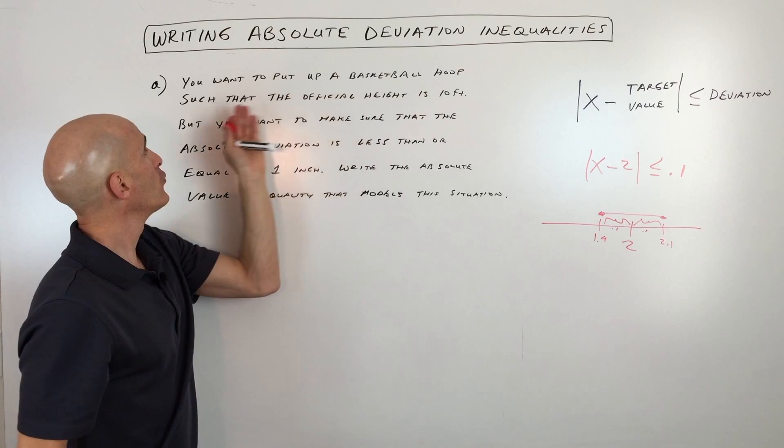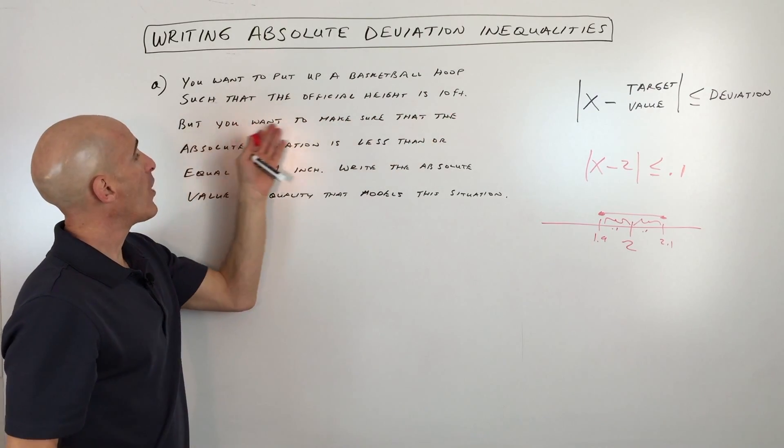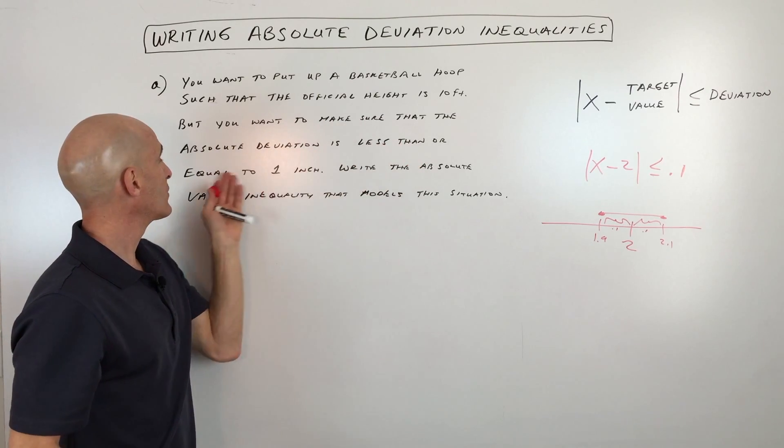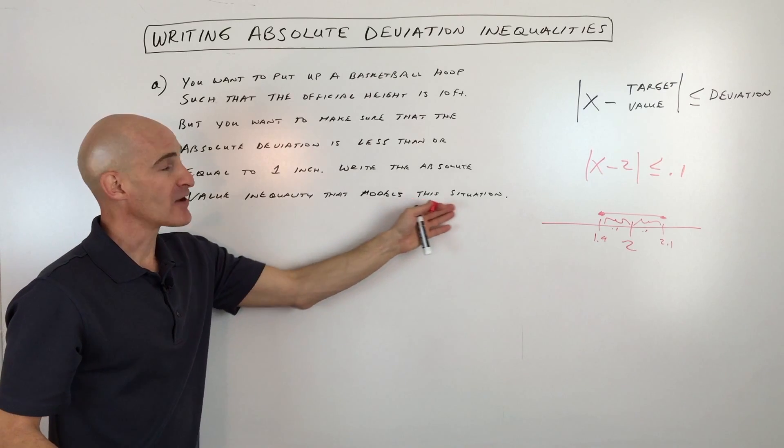You want to put up a basketball hoop such that the official height is 10 feet. But you want to make sure that the absolute deviation is less than or equal to one inch. Write the absolute value inequality that models the situation.